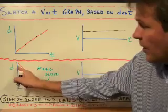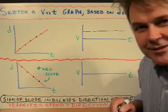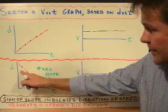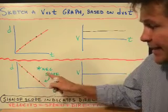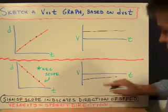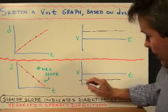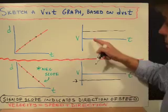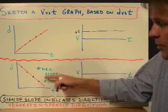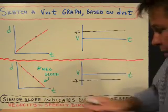Here we also see that it's a constant speed, but the slope is negative. The negative slope tells us the direction of the velocity — so it's a constant speed in the negative direction. This is a horizontal line in the negative direction, perhaps minus 2 meters per second, as opposed to the previous one which could have been plus 2 meters per second. The sign of the slope indicates the direction of velocity.